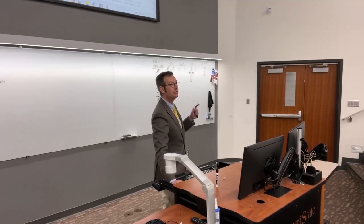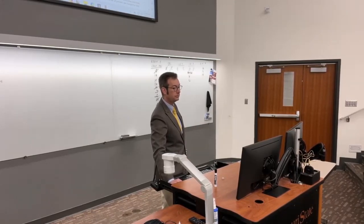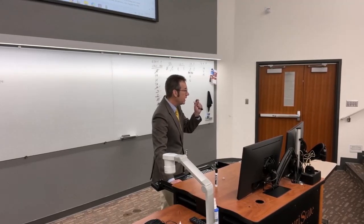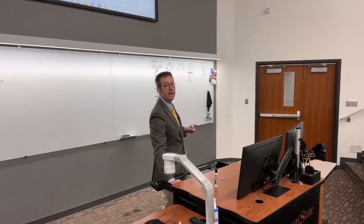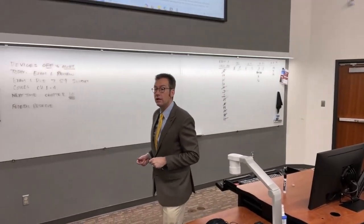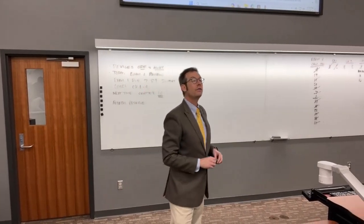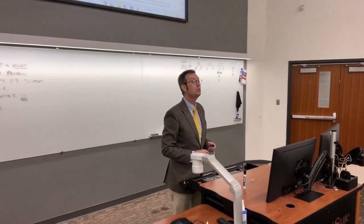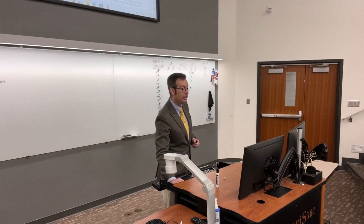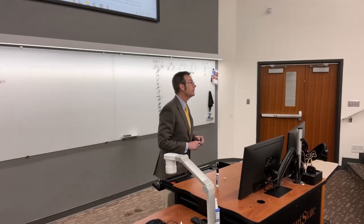Now to find the present value, hit NPV. The interest rate is an APR, so we need the monthly rate: 9 divided by 12. Enter that, arrow down, and compute.